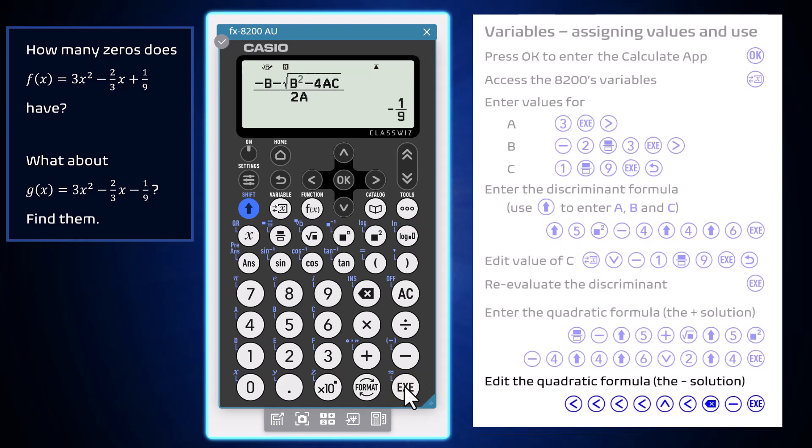The smaller of the zeros is negative 1 ninth and we are done. The values of A, B and C that have been entered will remain, even after the calculator has been turned off, but can always be overwritten as required.